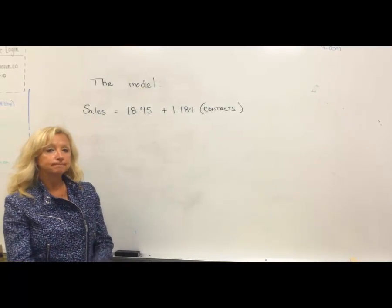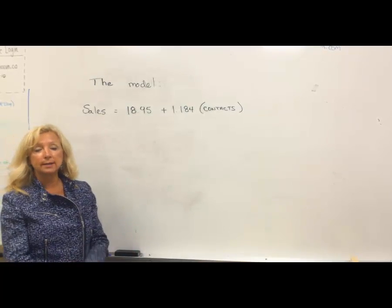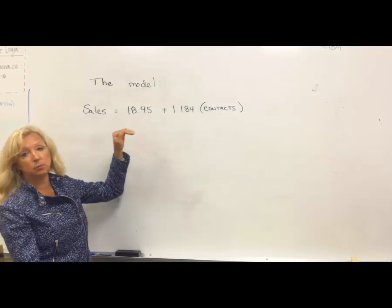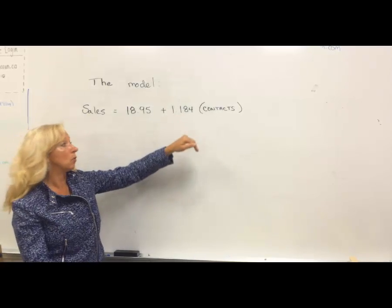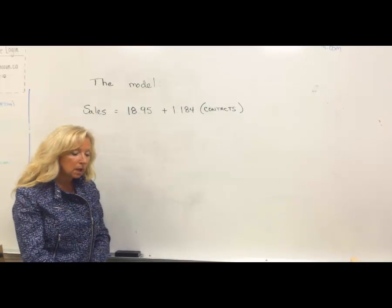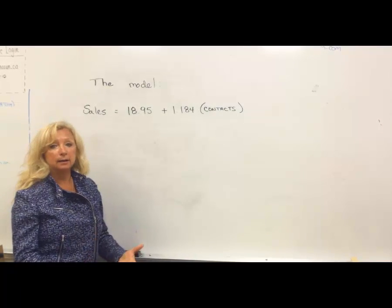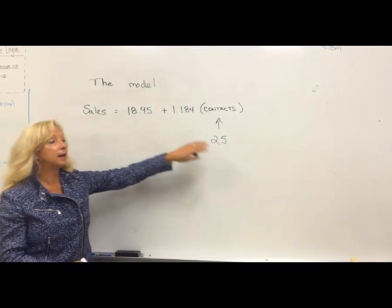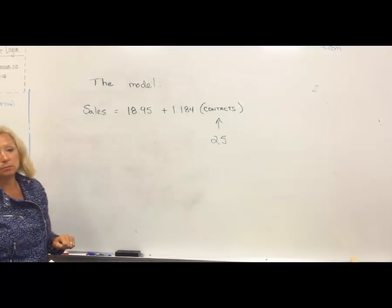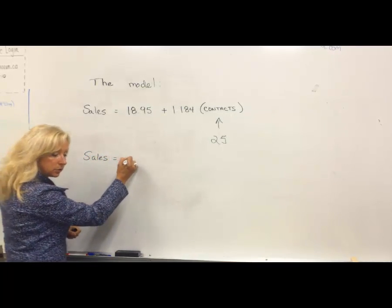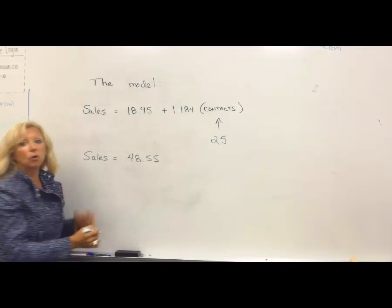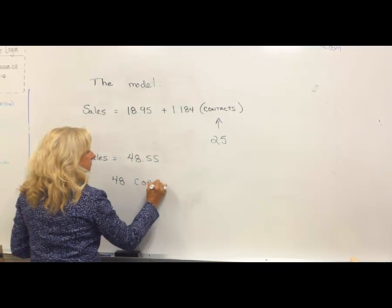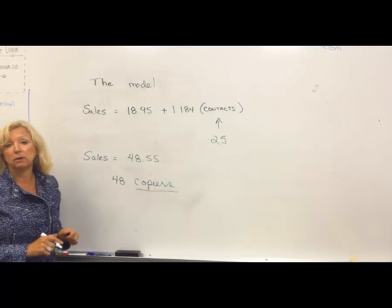We've generated a model in Excel. It gives us a forecasting model for sales based on the number of sales contacts made. The model is: sales equals 18.95 plus 1.184 times the number of contacts made. So, how many copiers could we expect a salesperson to sell based on 25 contacts? Multiplying 25 times 1.184, then adding 18.95, we get sales equal to 48.55 — we would expect that salesperson to sell 48 copiers. We round down because we're talking about discrete data.